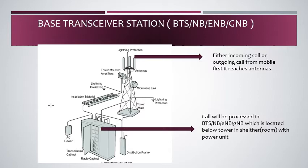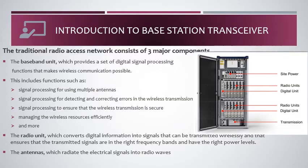There is also a microwave link antenna used as backhaul to connect to the core network. The base station transceiver, shortly termed BTS, in this example is an Ericsson BTS. It consists of three units: the baseband unit (also termed the digital unit), the radio unit, and the site power.